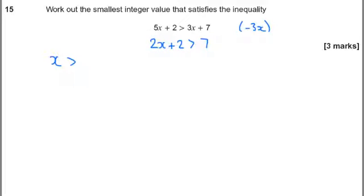So now I've got, it's looking a little bit more like this, but I've not got x on its own. I've got a 2x and a plus 2. Next thing to go is the plus 2, by taking away 2. That will now give me that 2x is greater than 5.